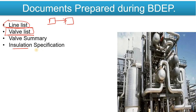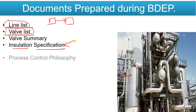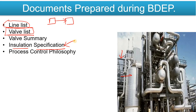Then there is the Insulation Specification. If insulation is being used in your plant — on equipment or lines — this document specifies which type of insulation to use, whether it is cold insulation or hot insulation, and what the thickness is.